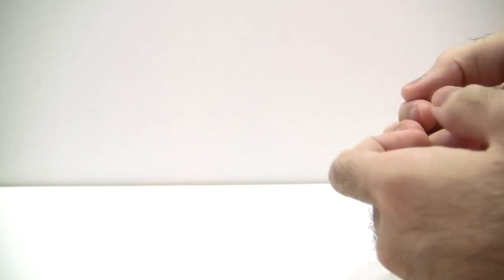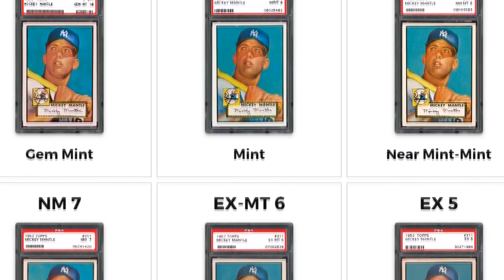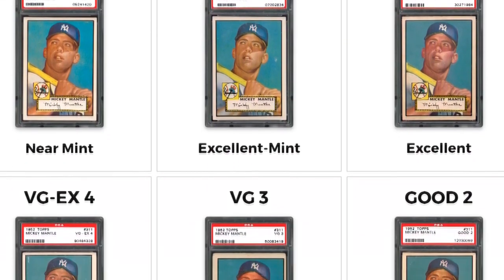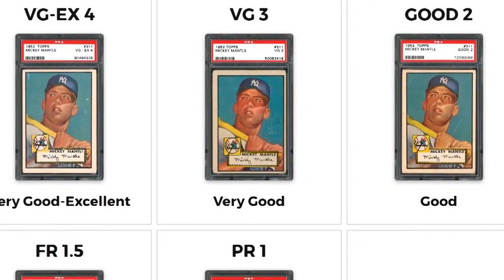Now, for those of you who don't know, grading services like PSA or BGS take your card, place them in a plastic slab, and assign them a number grade based on their condition. For PSA, it's between 1 to 10, 1 being poor and 10 being gem mint.